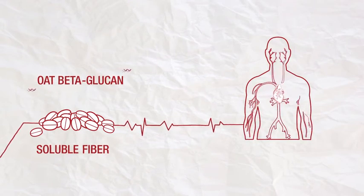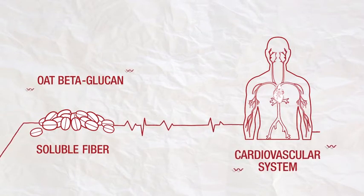Thus, oat beta-glucan present in Beta Heart is a healthy way to help support smooth functioning of the cardiovascular system.